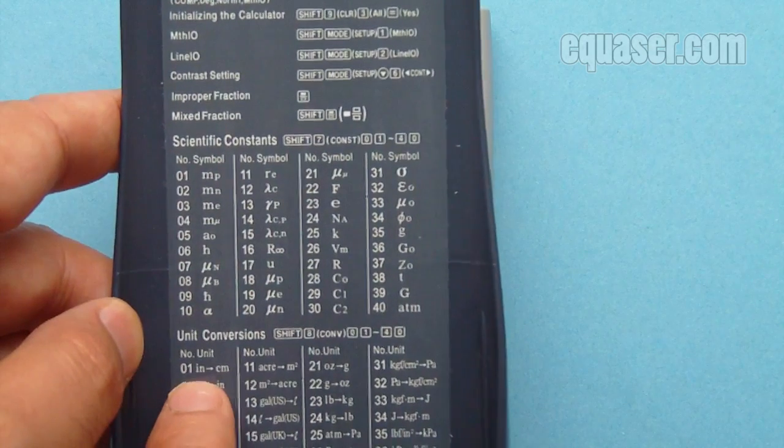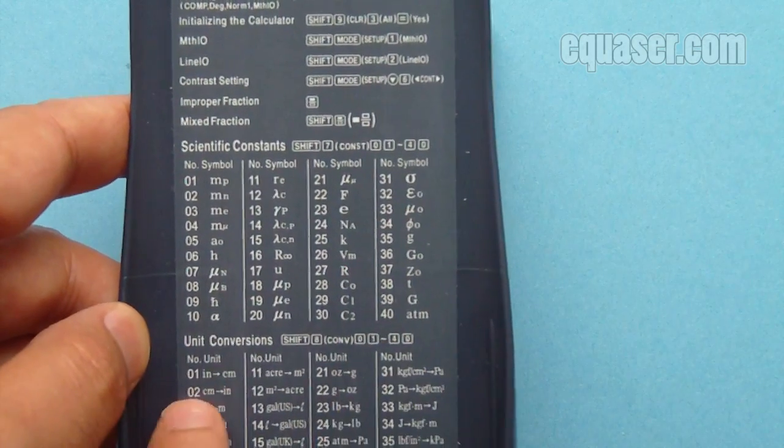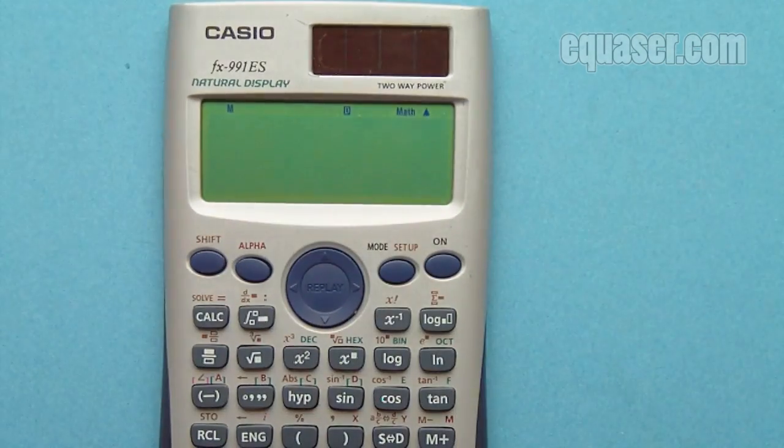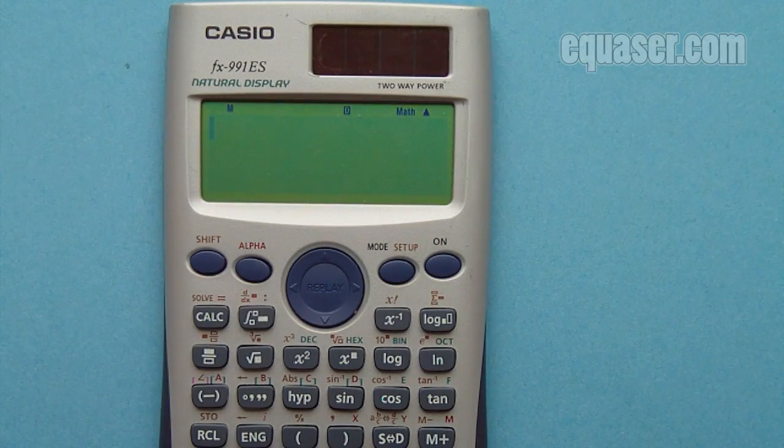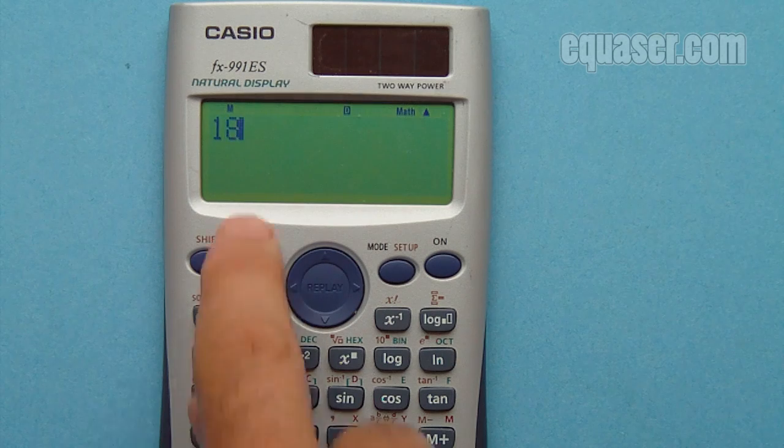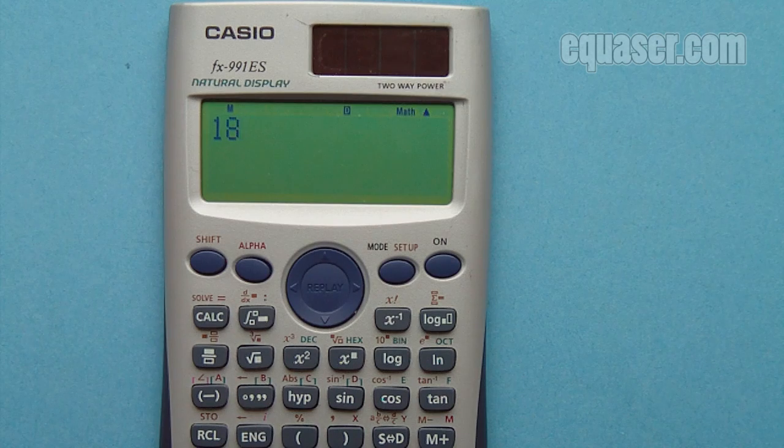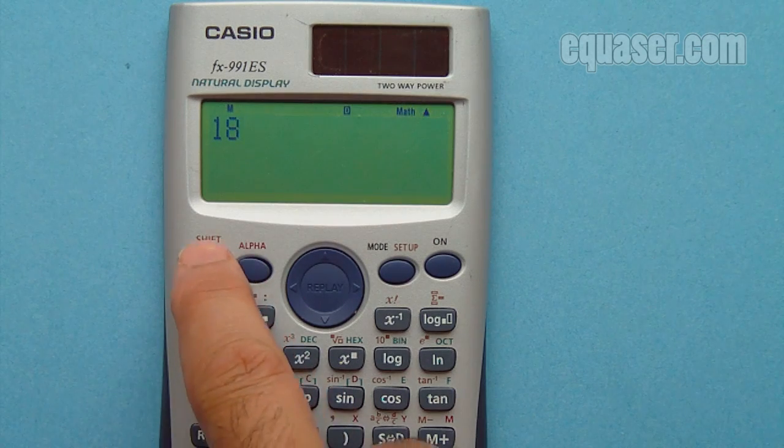01 is for inch to centimeter. Let's say we have 18 inches and we want to convert it to centimeter. To do that we press shift and number 8, which is for conversion purpose, the second function of 8.